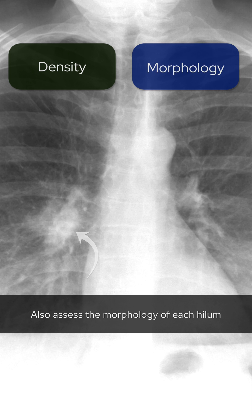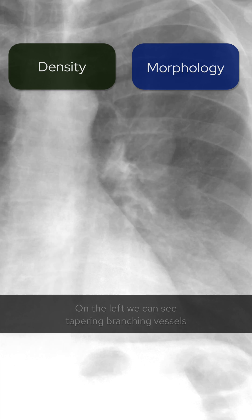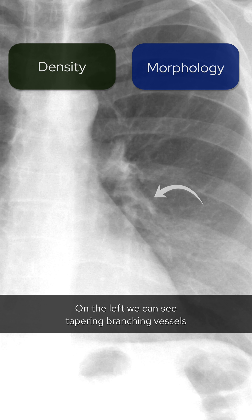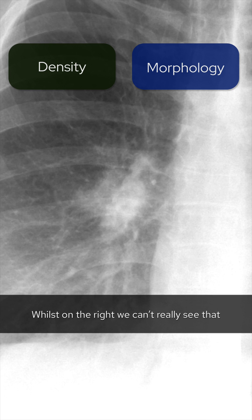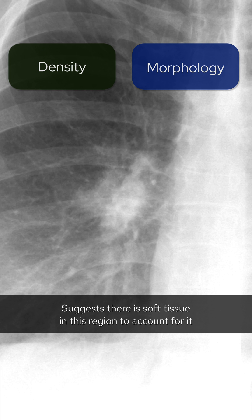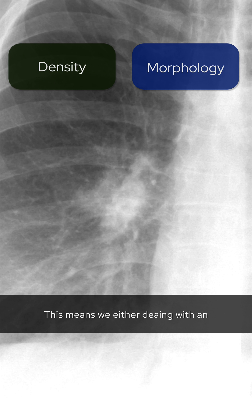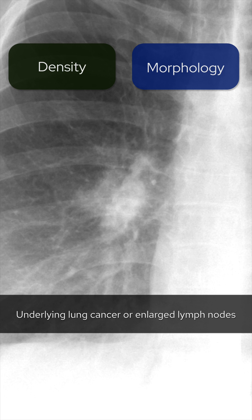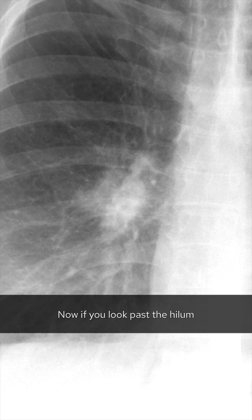Also assess the morphology of each hilum. On the left we can see tapering branching vessels, whilst on the right we can't really see that. Increased density plus this abnormal morphology suggests there is soft tissue in this region to account for it. This means we're either dealing with an underlying lung cancer or enlarged lymph nodes.